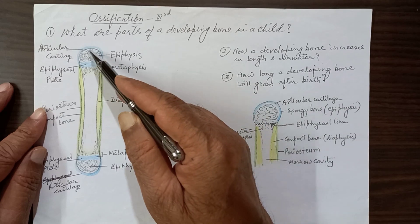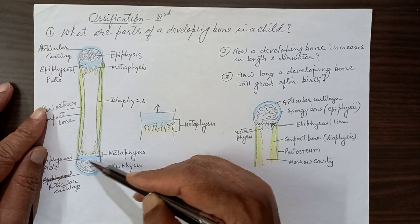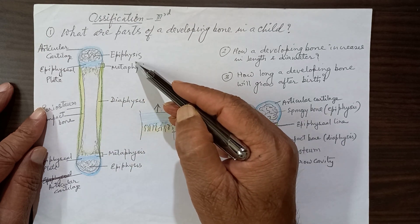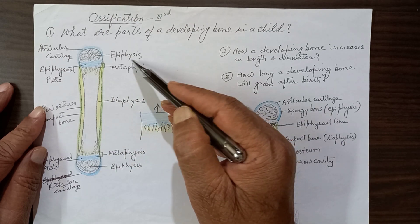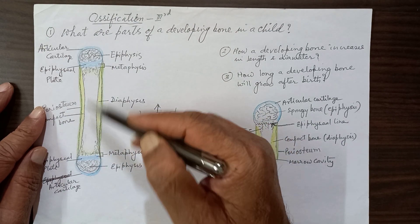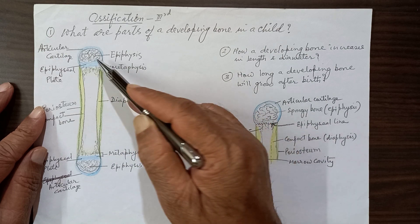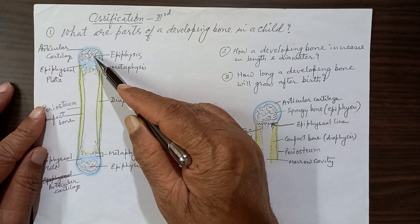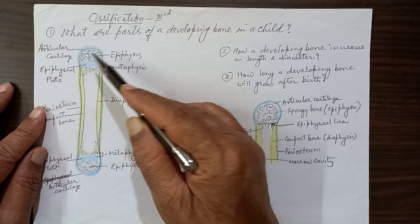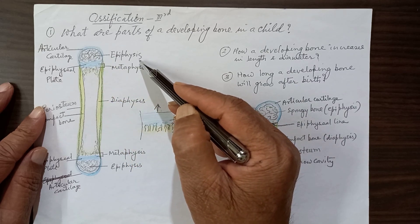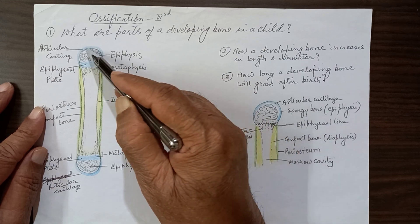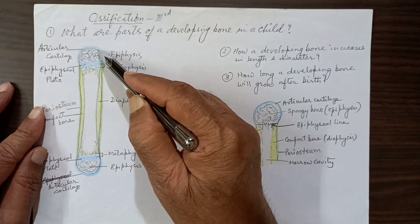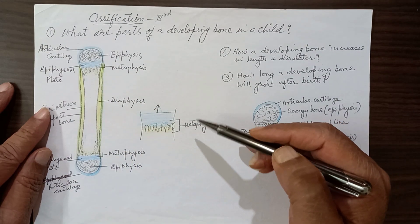The part of the spongy bone which has formed by the secondary center at both the upper end and lower end is called the epiphysis. This is spongy in nature and is covered by a thin layer of hyaline cartilage known as the articular cartilage.